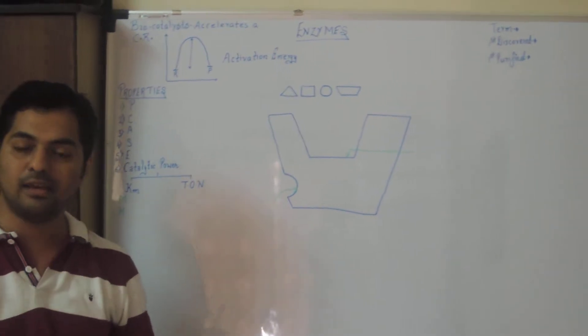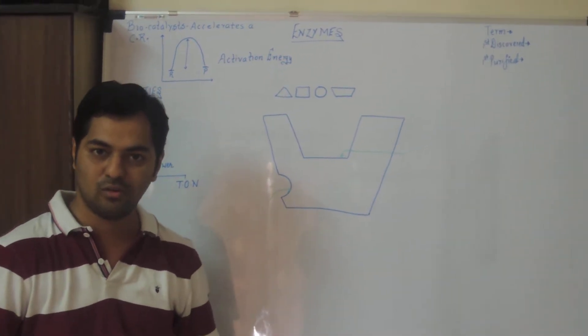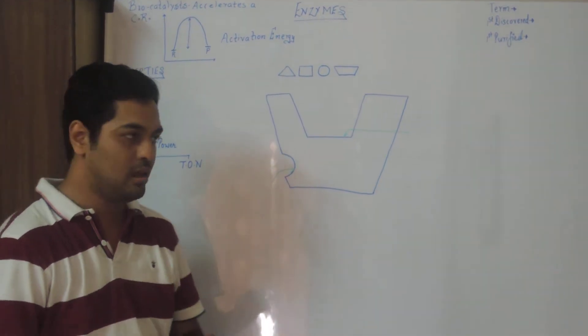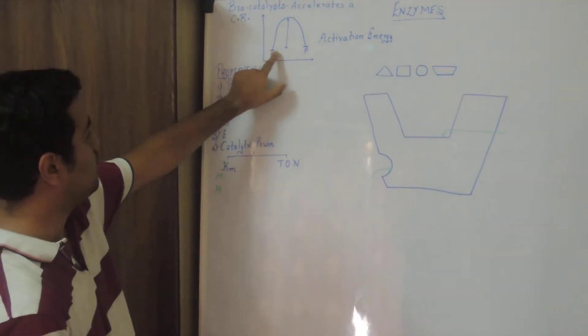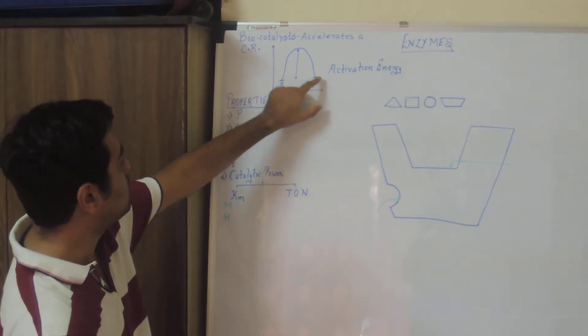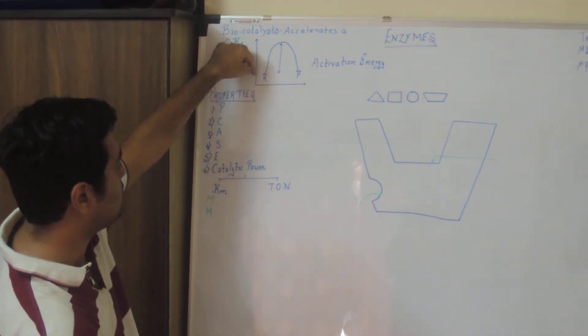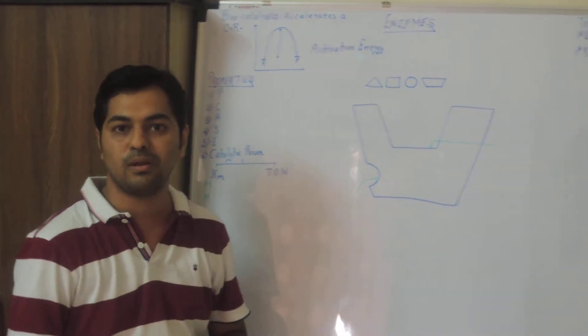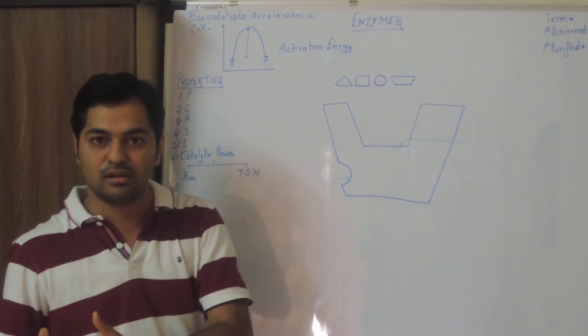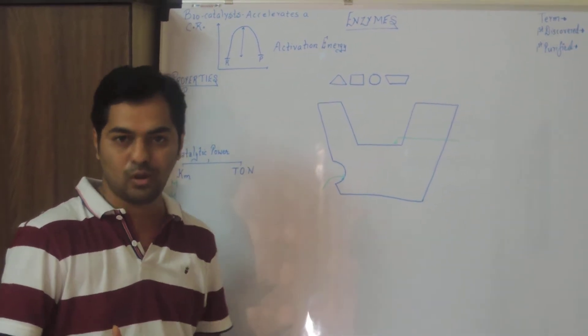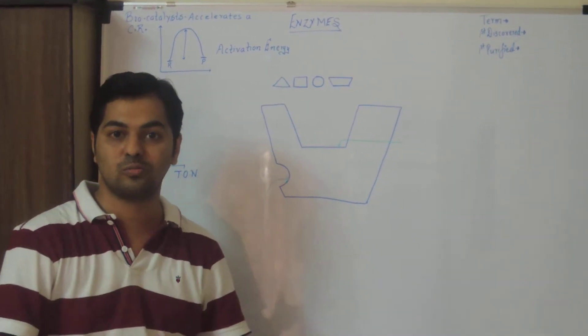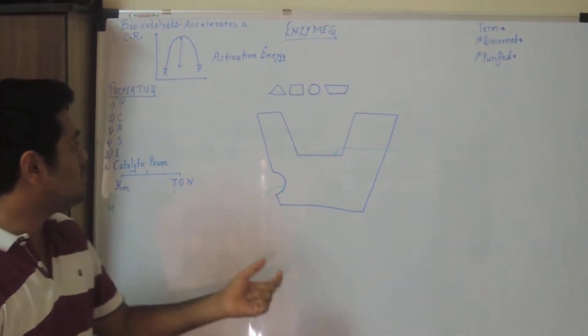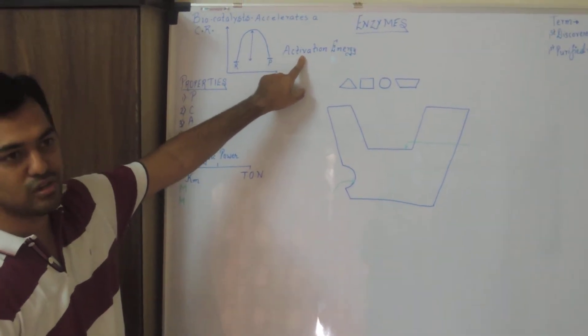So when we are saying it is accelerating the chemical reaction, what is it specifically doing? Basically whenever in a reaction, a reactant has to be converted into a product, it requires a certain amount of energy for that process to be taking place. Now basically if the reactant is converted into a product, why is that energy required? It is required in order to break the bonds and form new bonds to produce the products. So this energy we call activation energy.